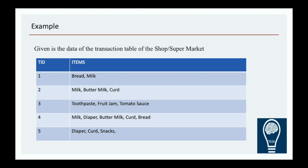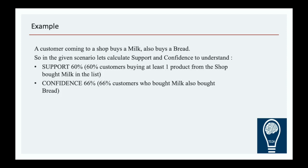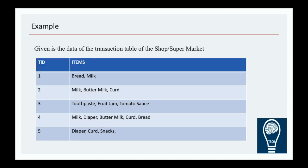Let's understand that with a simpler example. As you can see, there is a transaction table with five records containing day-to-day products from a supermarket. We are trying to find out the likelihood of a customer buying milk and also buying bread. First, we find the support for milk: it appears in transactions 1, 2, and 4 — three occurrences out of five — so support = 3/5 × 100 = 60%.